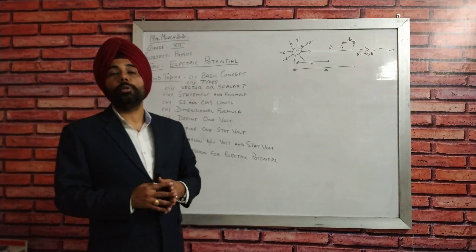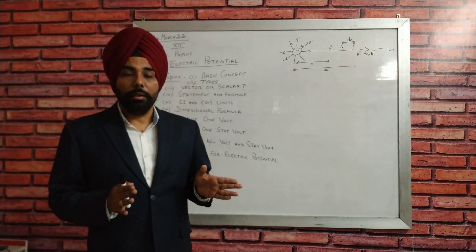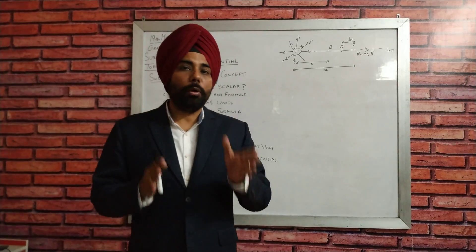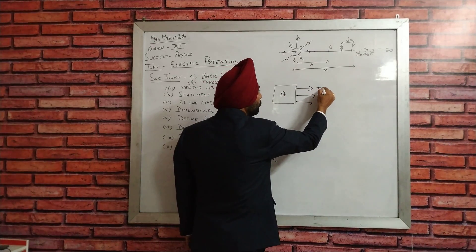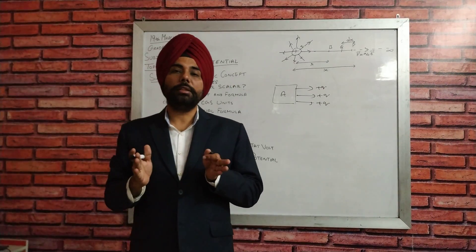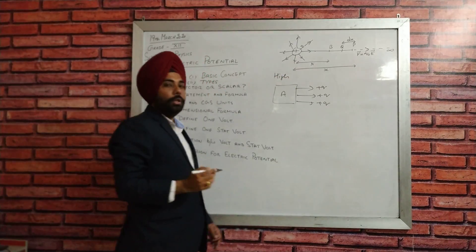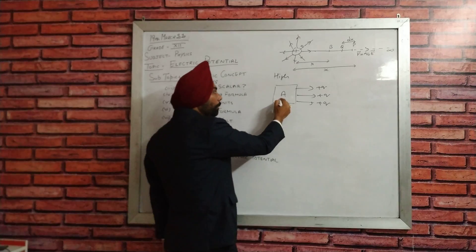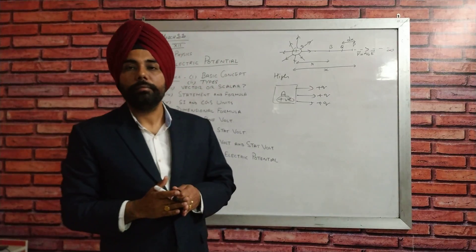First of all, we are going to the basic concept of electric potential. What is electric potential? It is a degree of electrification which determines in which direction the charge will flow. If anybody — suppose body A — is giving positive charge, which means that body is at high potential, and in physics we also say it is at positive potential, just like the positive terminal of an electric cell.